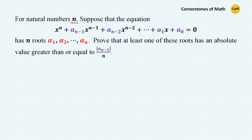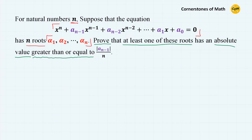For natural numbers n, suppose that the equation x to the power of n plus a_{n-1} x to the power of n minus 1 plus a_{n-2} x to the power of n minus 2 plus ... plus a_1 x plus a_0 equals 0 has n roots: alpha 1, alpha 2, so on, alpha n. Prove that at least one of these roots has an absolute value greater than or equal to the absolute value of a_{n-1} over n.